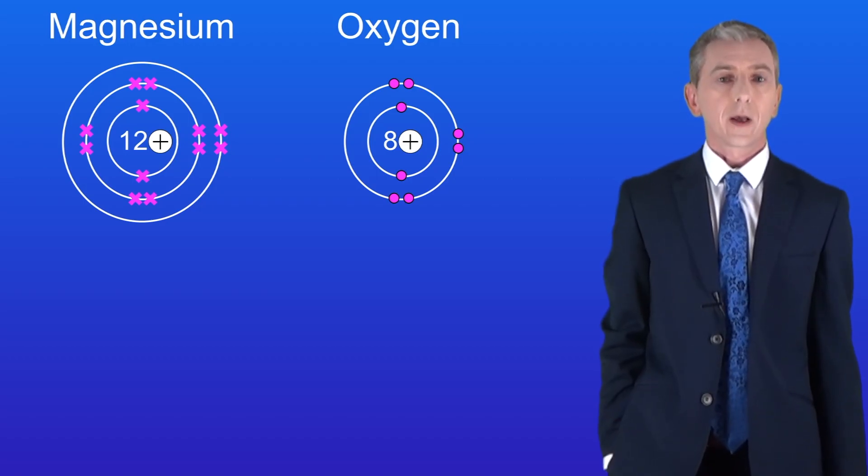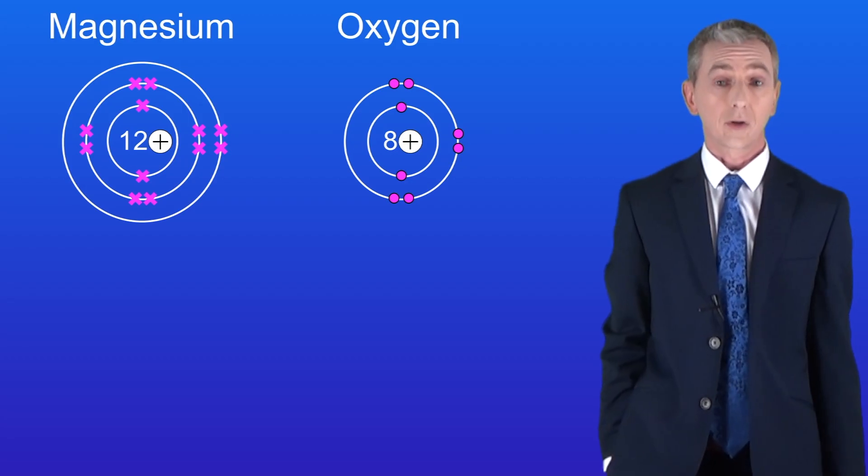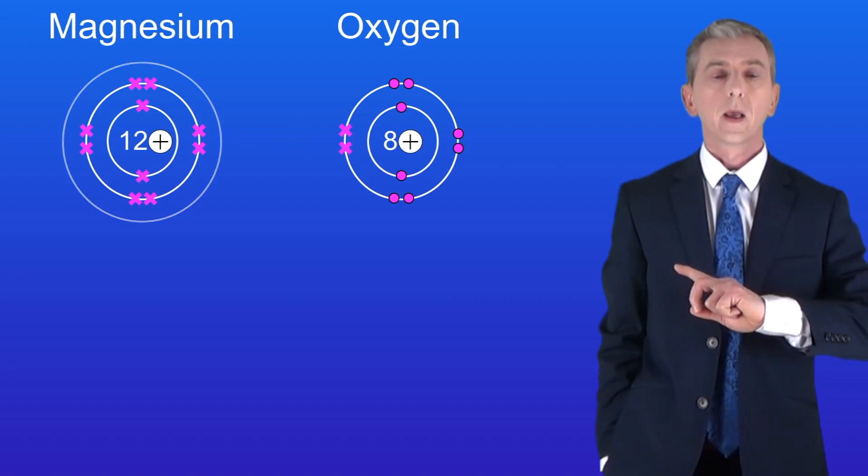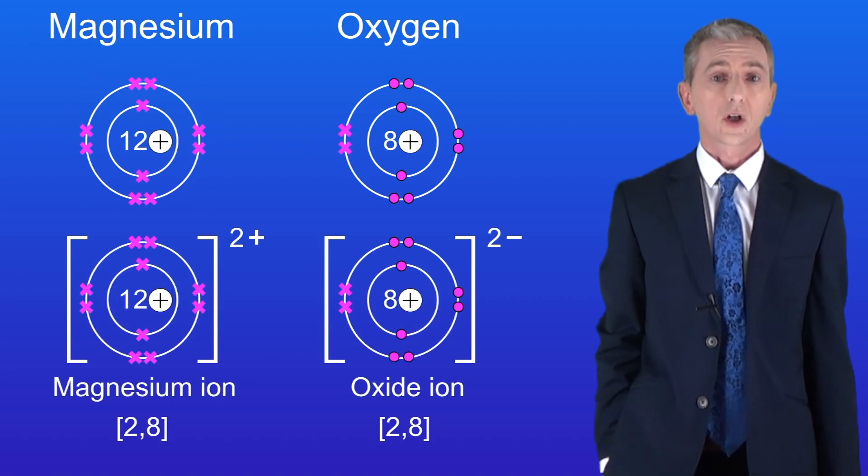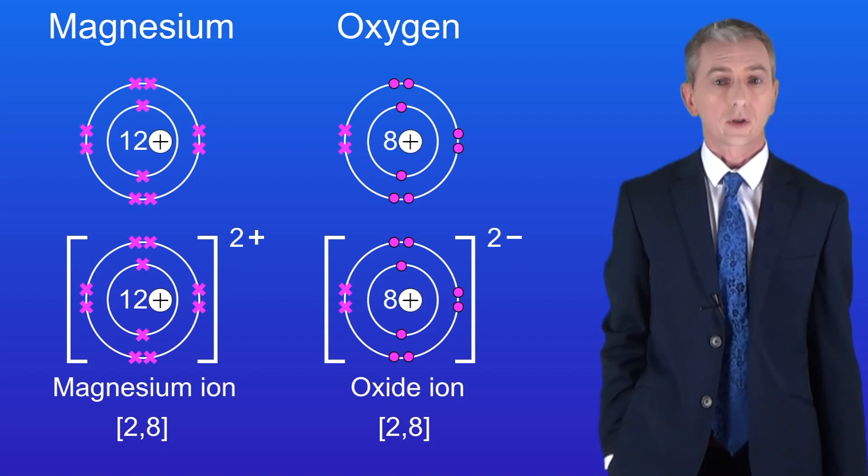So in order to achieve a full outer energy level the magnesium atom loses the 2 electrons in its outer energy level and it passes them over to the oxygen atom. Now we can see that the magnesium still has 12 protons but it only has 10 electrons. This means that it's got an overall 2 positive charge and we call this the magnesium ion.